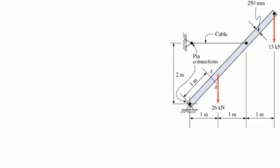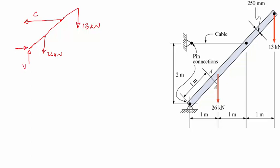First, we have to find all the different stresses at different points, so let's draw the free body diagram. From here I have about 26 kilonewtons, and from here 13 kilonewtons, and then there is a cable at point C. When I draw the free body diagram and remove that joint, I will have a vertical force and a horizontal force.